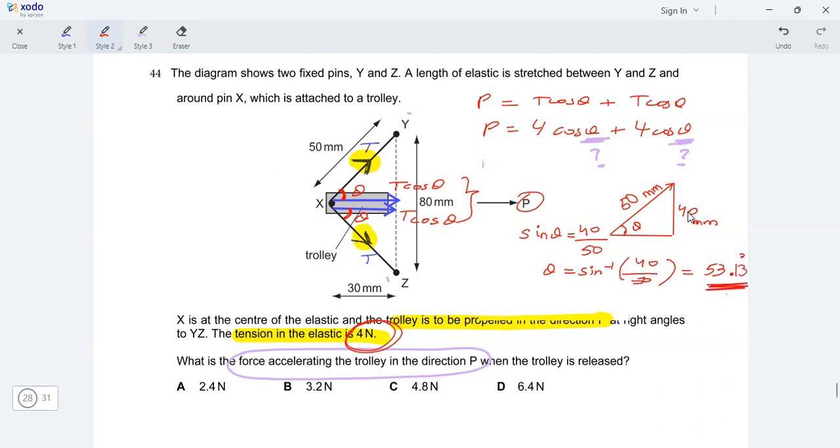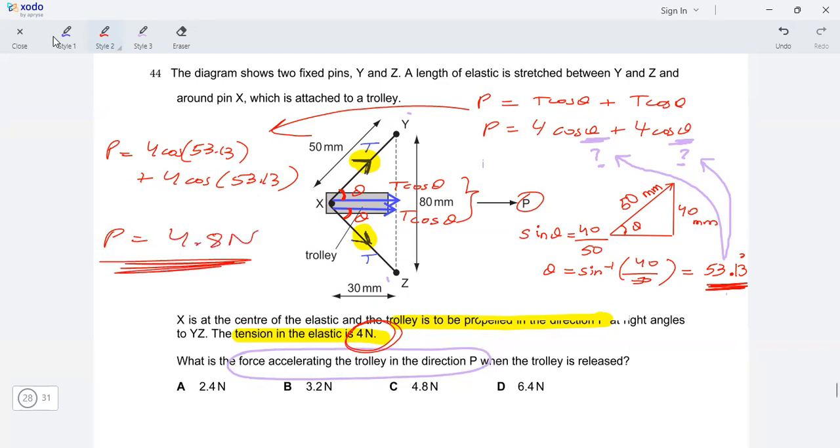Okay, so I finally got the angle theta and my question is almost solved. Moving back to the equation above and simply substitute these values for the angle theta and solve the equation. Let's do that. So I'm writing it over here. P is equal to 4 cosine 53.13 plus 4 cosine 53.13. Solving and you should get 4.8 Newton. And that's it. That is your answer, which is option C.